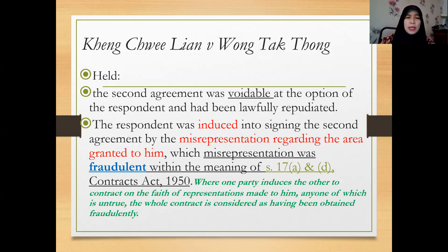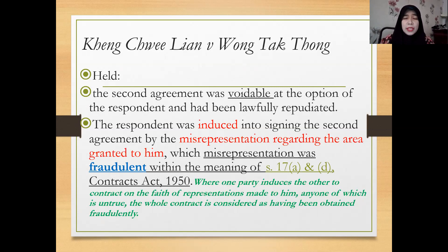The Court of Appeal observed that the second agreement was voidable at the option of the respondent, the affected party, and had been lawfully repudiated. The most relevant finding: the respondent was induced into signing — executing — the second agreement by misrepresentation regarding the area granted to him. He thought the area was broad enough to cover the biscuit factory, but it turned out to be insufficient. The court specifically found the misrepresentation was fraudulent.